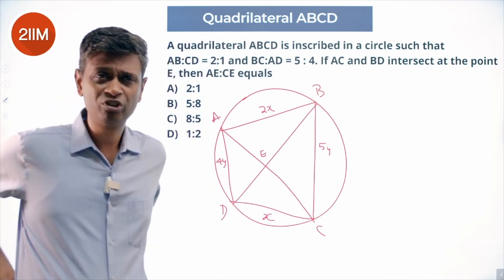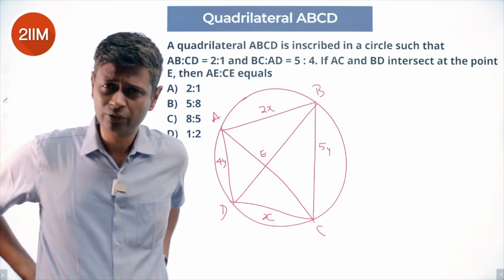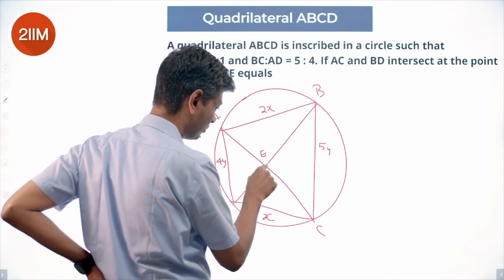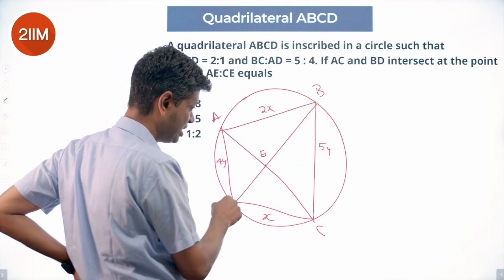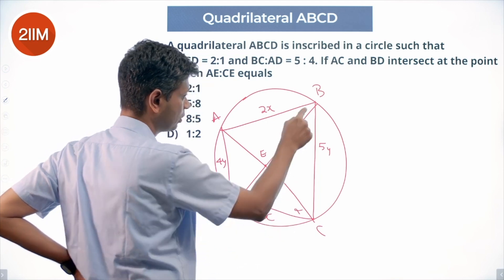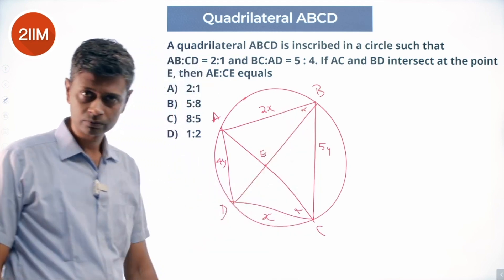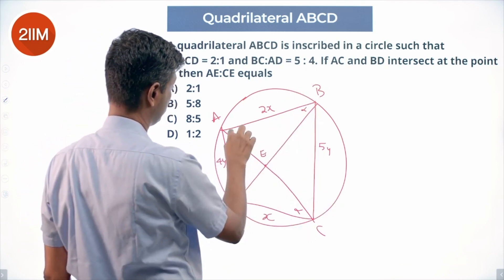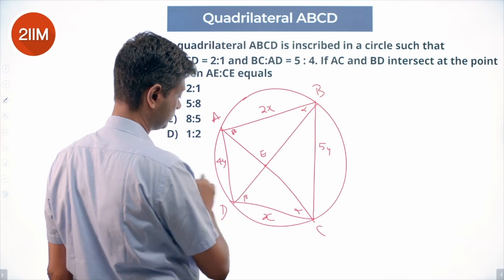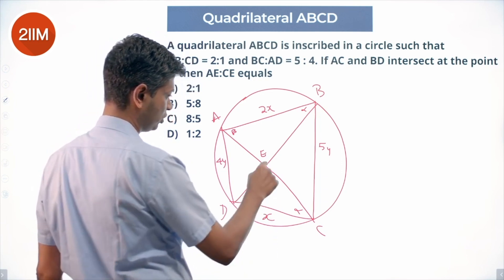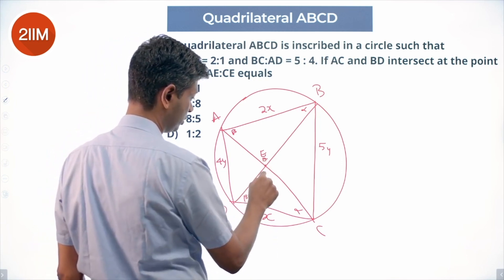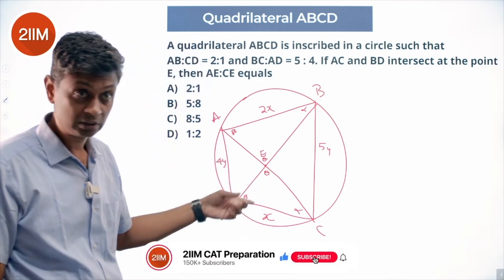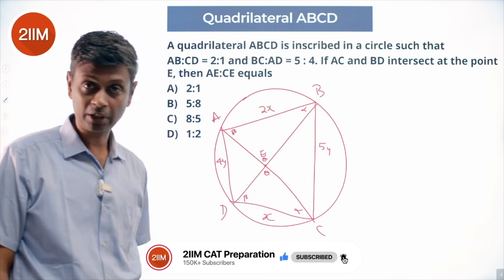We know this is a cyclic quadrilateral inscribed in a circle with many properties. Angle ABD equals angle ACD (both alpha). From the other side, we have beta and theta angles. Using vertically opposite angles and angles made in one part of the circle by an arc, these two triangles are now similar.